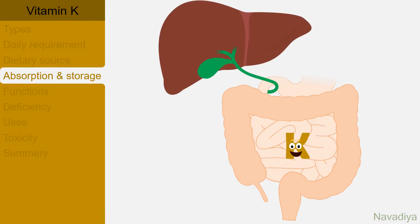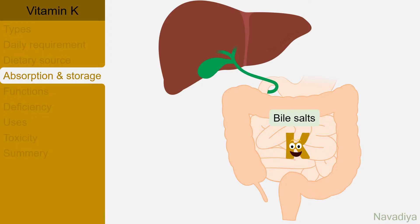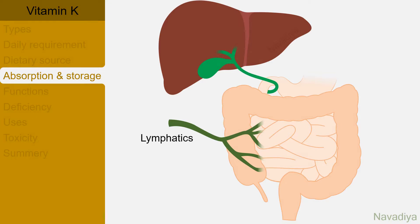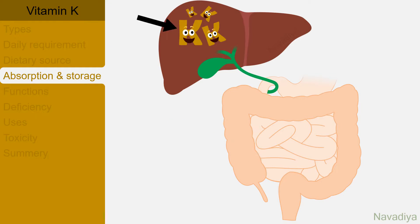Absorption occurs mainly in the small intestine. As it's fat-soluble, its absorption requires bile salts from the liver. It is absorbed in chylomicrons along with fat into the lymphatic channels. It is stored mainly in the liver. However, storage does not occur to a large extent and its level declines rapidly if it is not taken in diet regularly.